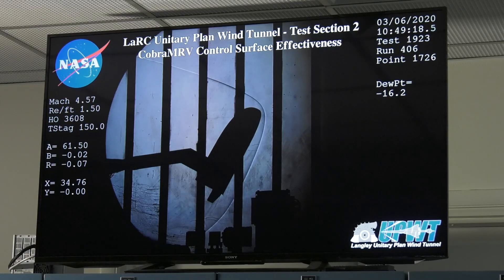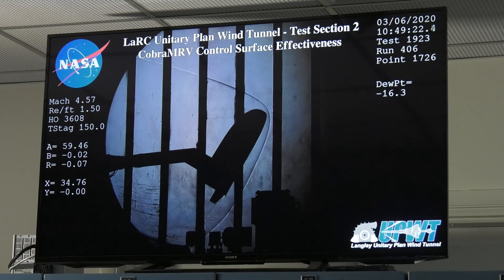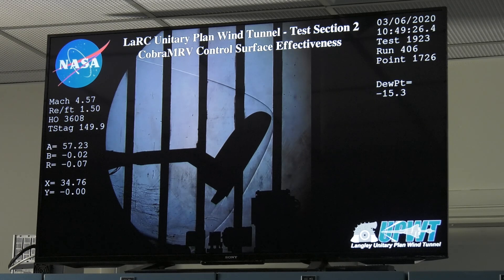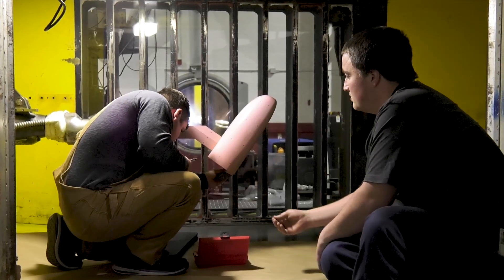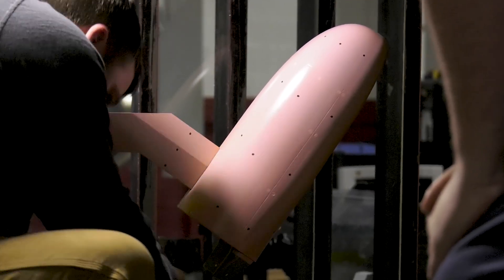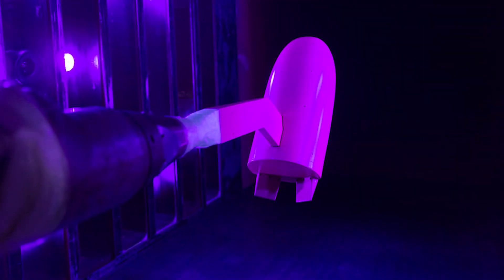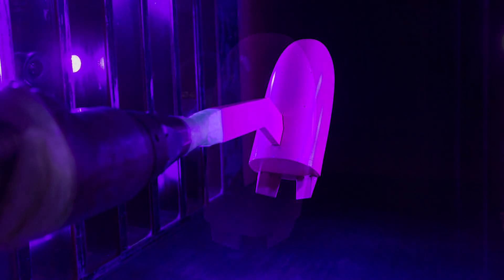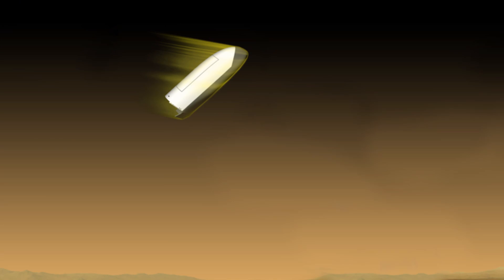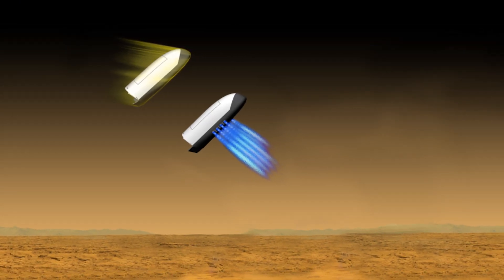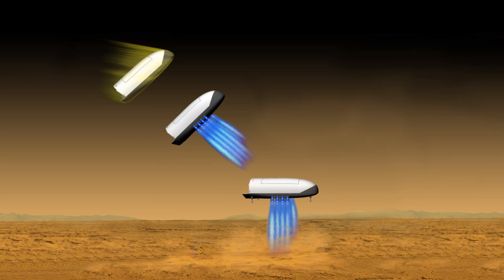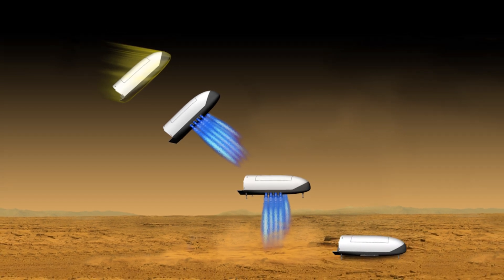One comparison was the control surface effectiveness for a hypersonic entry-descent vehicle for landing humans on Mars, the mid-lift-to-drag ratio Cobra MRV. This vehicle has two body flaps for aerodynamic control during descent through the Martian atmosphere. These flaps allow the vehicle to adjust its flight path very precisely before retro rockets take over to further slow and maneuver the vehicle from Mach 2 down to a soft landing.